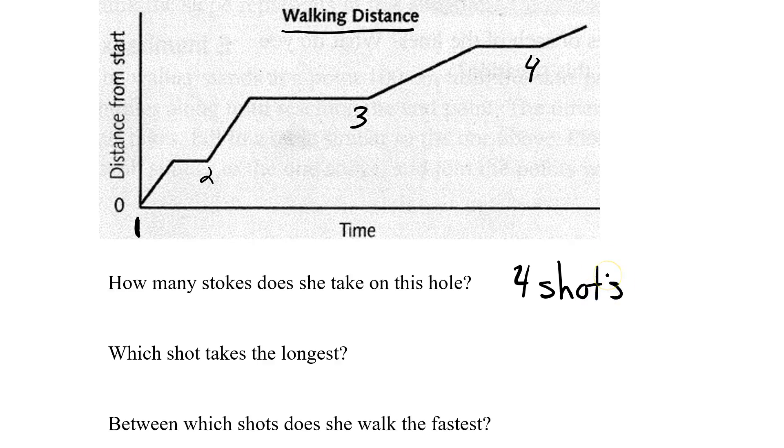In this case you have to realize that a diagonal line indicates movement. A straight line indicates getting ready for a shot. And you also have to realize that she will shoot just before she moves. So every diagonal line here indicates that she had just made a shot. So in this case you're counting diagonals.